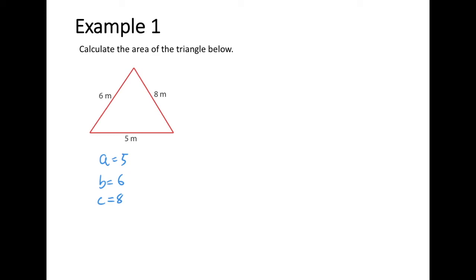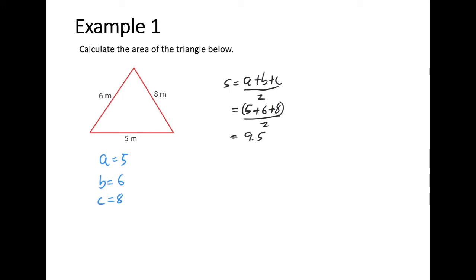The first step is to calculate my S value: A plus B plus C divided by 2. So that would be 5 plus 6 plus 8, divided by 2, which works out to be 9.5. Be really careful that you are using brackets when entering this into your calculator in one entry — (5 + 6 + 8) ÷ 2 — which gives you 9.5.